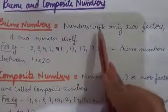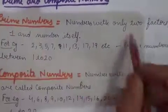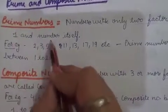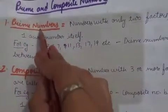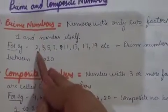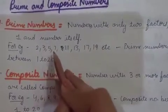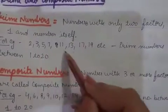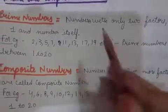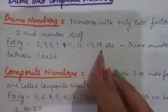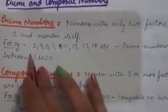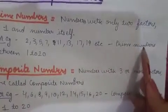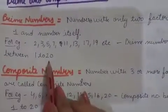Prime numbers are numbers with only two factors - one and the number itself. For example, 2, 3, 5, 7, 11, 13, 17, and 19. These numbers only appear in their own table and in the table of 1. These are prime numbers between 1 to 20.